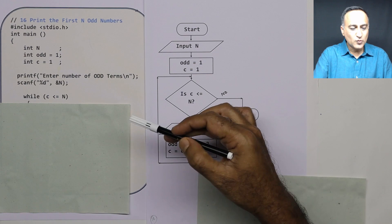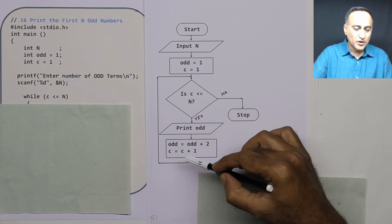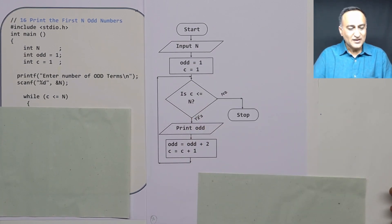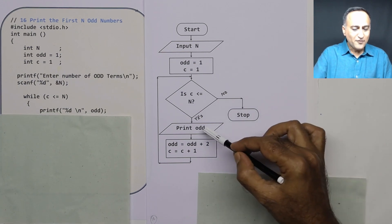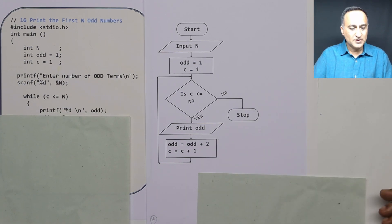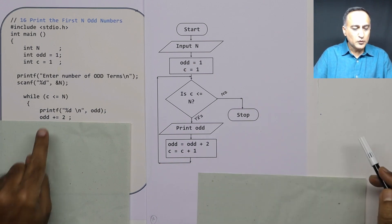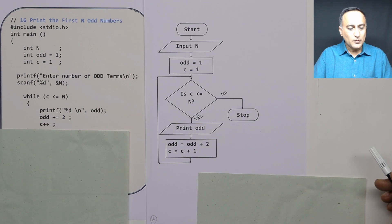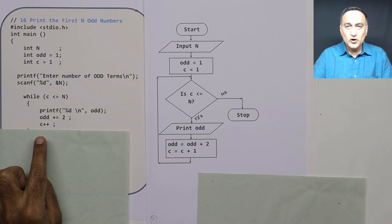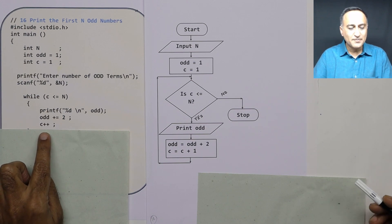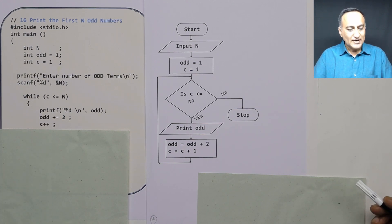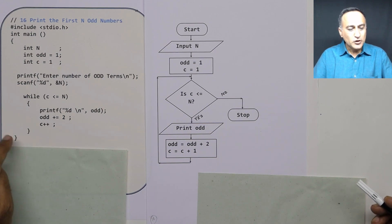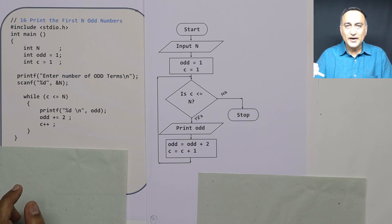I have used the while loop with condition c less than or equal to n. Then printf prints the odd number. Then I am increasing the odd number by 2, and I am increasing the count of how many odd numbers I have printed by 1. Since I have printed one odd number, I increase c by 1, so it becomes 2.